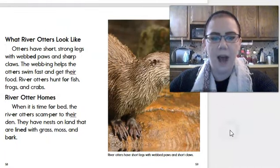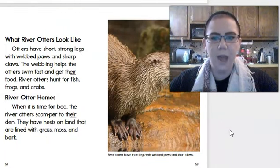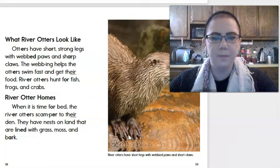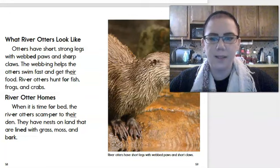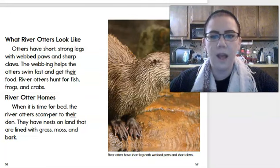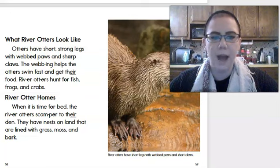What river otters look like. Otters have short, strong legs with webbed paws. Check out those webbed paws. And sharp claws. The webbing helps the otters swim fast and get their food. River otters hunt for fish, frogs, and crabs.